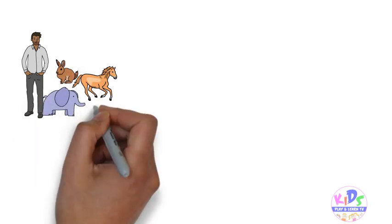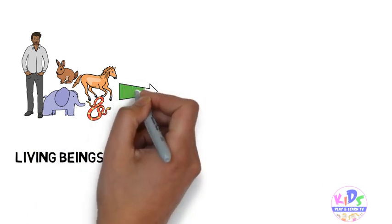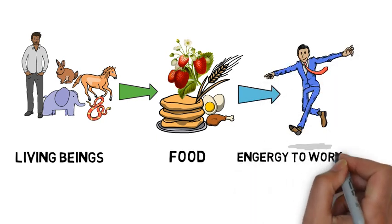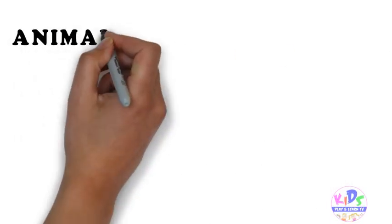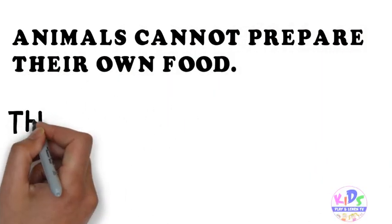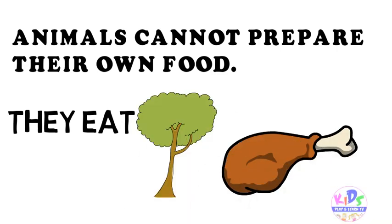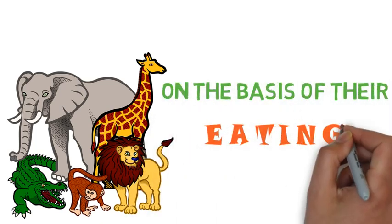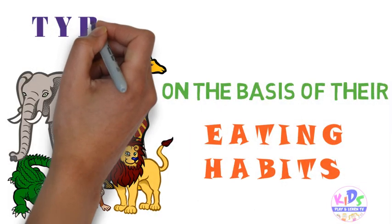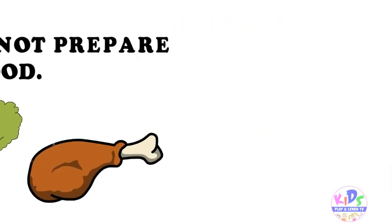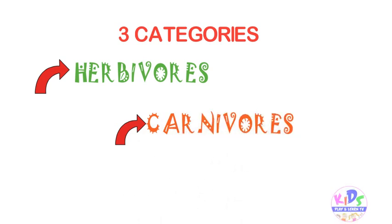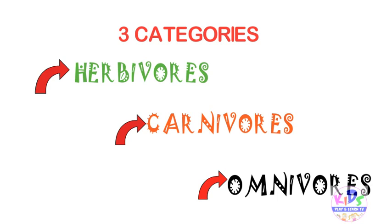Dear children, as we all know that all living beings need a variety of food to get energy to work and live. Animals cannot prepare their own food — they depend upon plants and other animals. Different animals have different eating habits, and on the basis of their eating habits, we can divide animals into three categories: the first category is herbivores, second is carnivores, and third is omnivores.